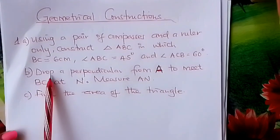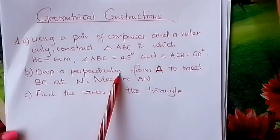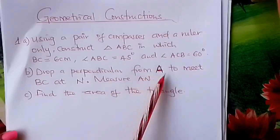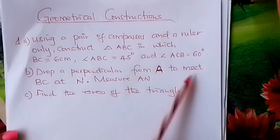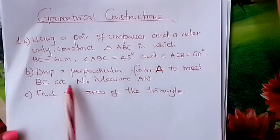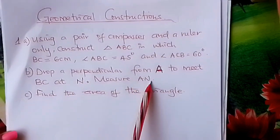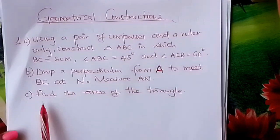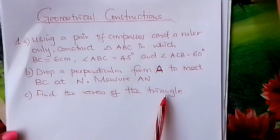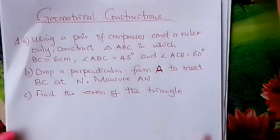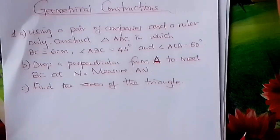Drop a perpendicular from A to meet BC at N. Measure AN. Finally, find the area of the triangle.